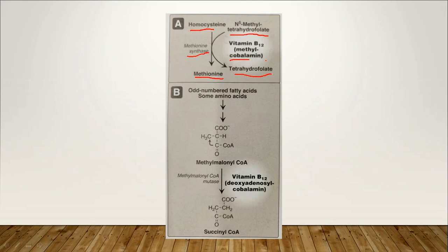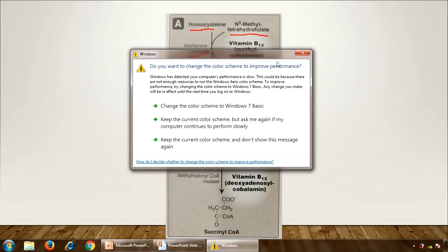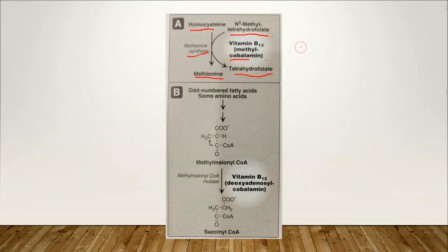In the case of deficiency of vitamin B12, this reaction does not proceed. When this reaction will not proceed, N-methyl tetrahydrofolate will not be converted into tetrahydrofolate. Because the methylated form cannot be converted directly to the tetrahydrofolate form, the tetrahydrofolate is trapped in the methyl form. The level of the other form decreases. Thus, cobalamin deficiency leads to deficiency of the tetrahydrofolate form which is needed in purine synthesis.